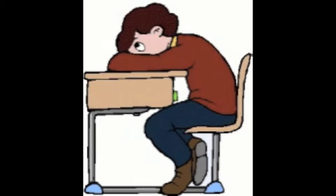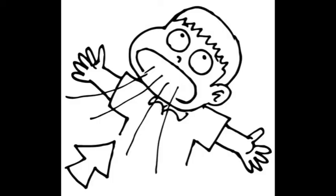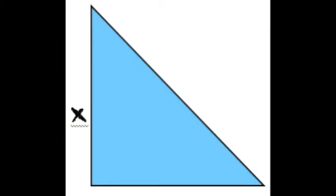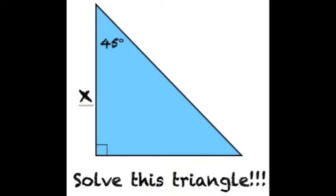I'm sitting in class, second hour math. I look at the paper — a three-sided shape. I take a deep breath in and stare at the question. They give me a sigh, no more provided except for two angles. Solve this triangle — but what do I do now?